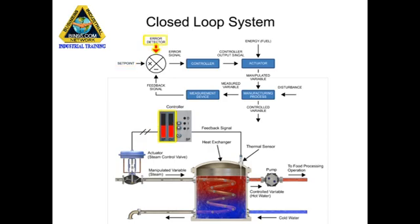Error detector compares the set point to the feedback signal and produces an output proportional to the difference between them. Error signal is the output of the error detector. If the feedback signal and set point are equal, the error signal is zero.